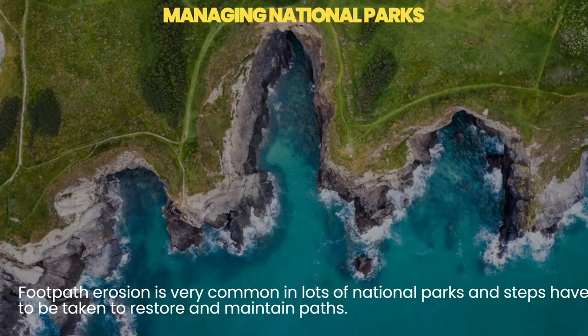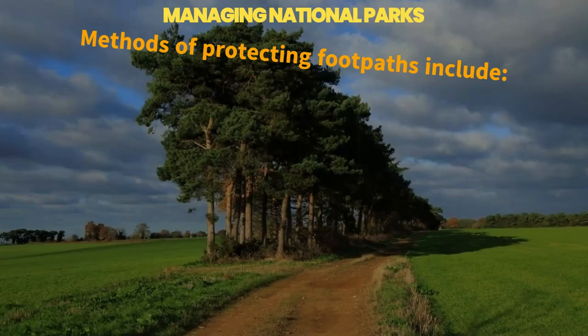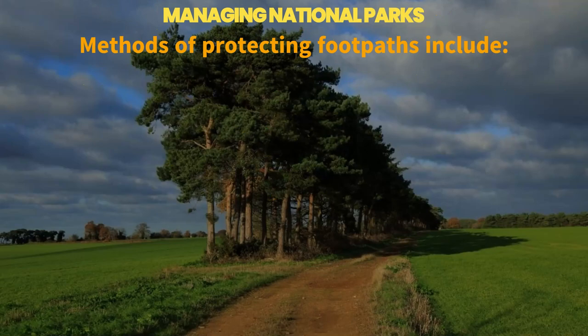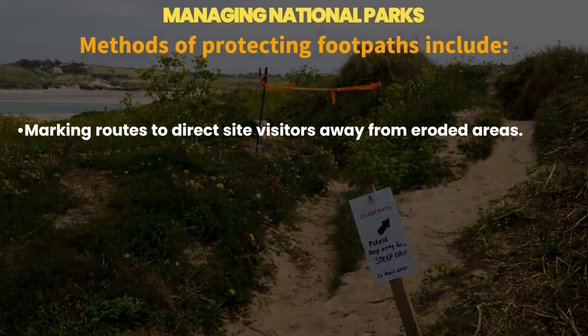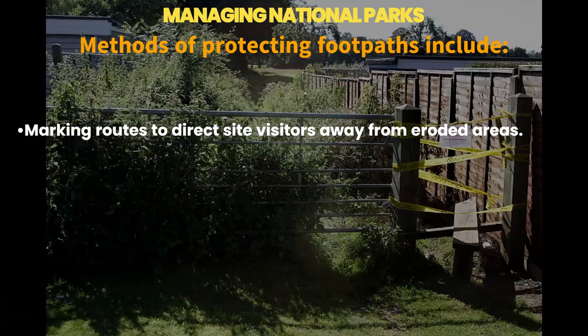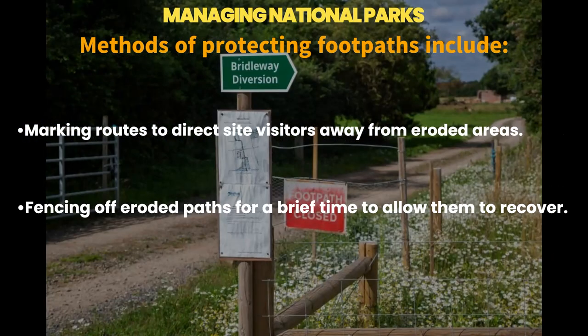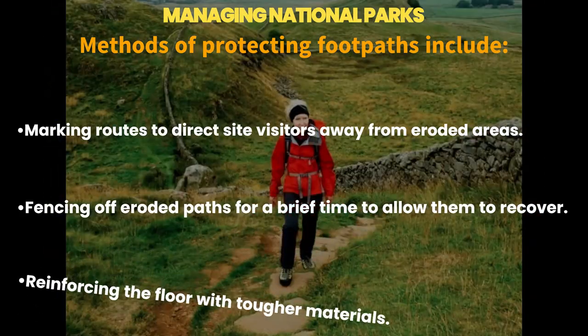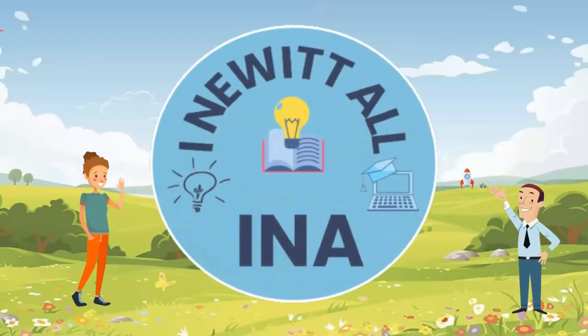Footpath erosion is very common in many national parks and steps have to be taken to restore and maintain paths. Methods of protecting footpaths include marking routes to direct visitors away from eroded areas, fencing off eroded paths for a brief time to allow them to recover, and reinforcing the ground with tougher materials.